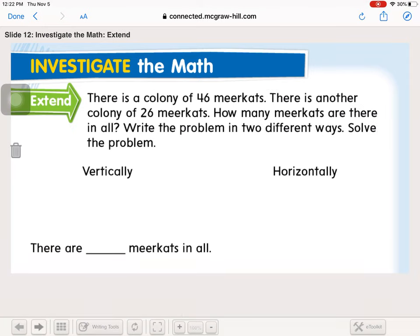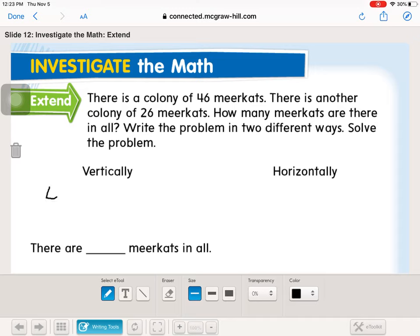So let's look at another problem. It says there's a colony of 46 meerkats. There is another colony of 26 meerkats. How many meerkats are there in all? Write the problem in two different ways and solve the problem. So we have 46 meerkats plus 26 meerkats.